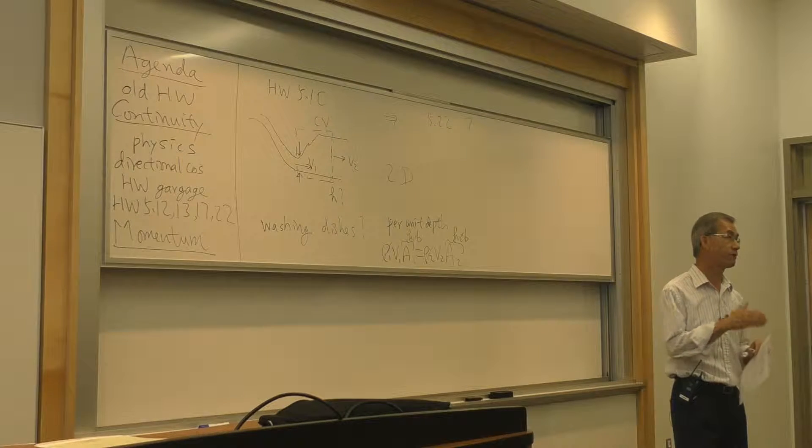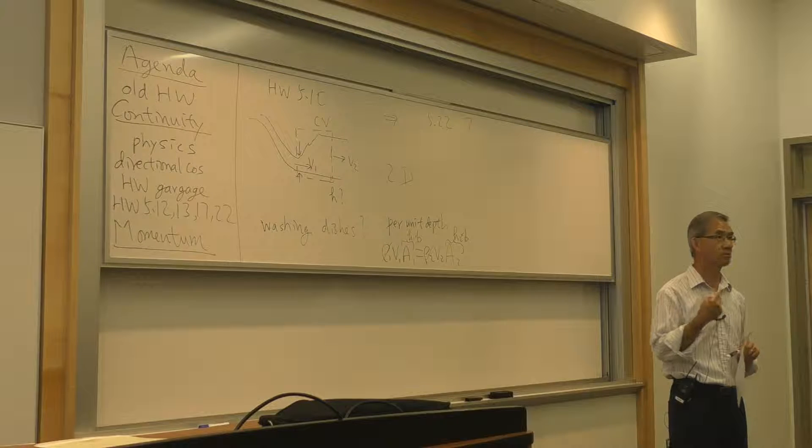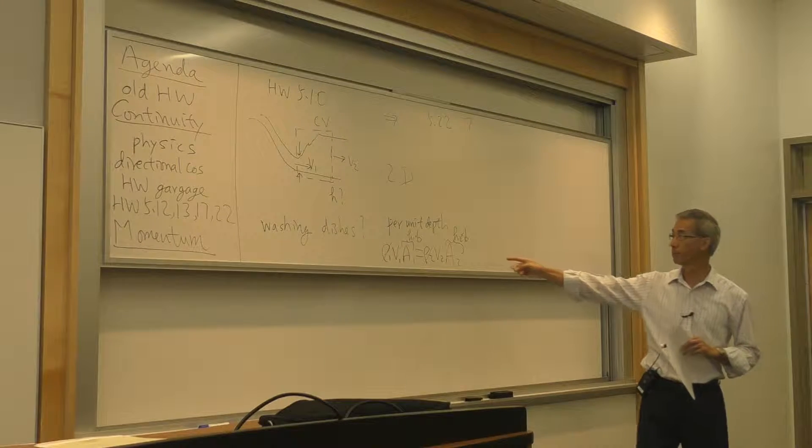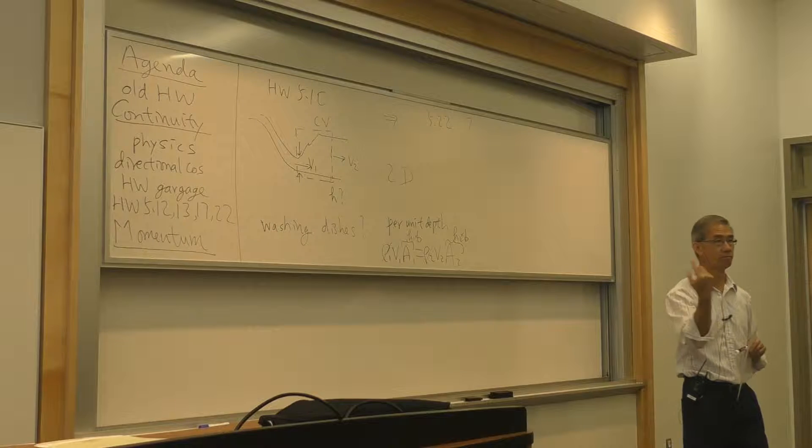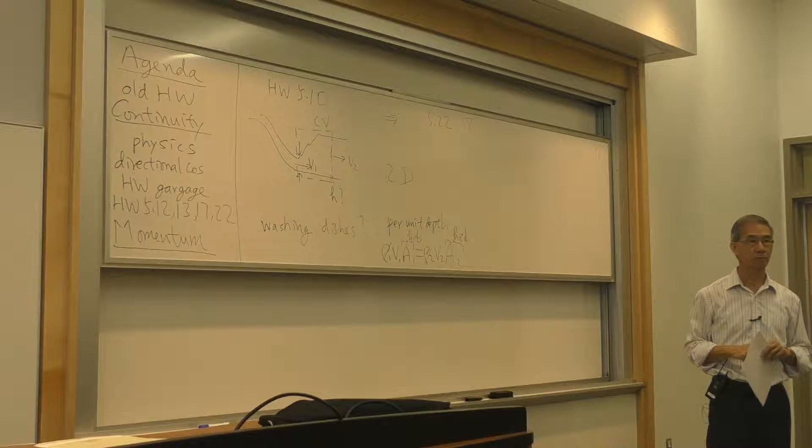Yeah. So when that happens, axis symmetric, it's not appropriate to call it per unit depth. Because it's not. It's not. It's a circle. Other questions? Good questions.